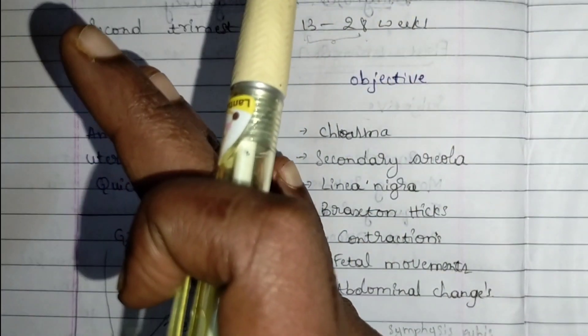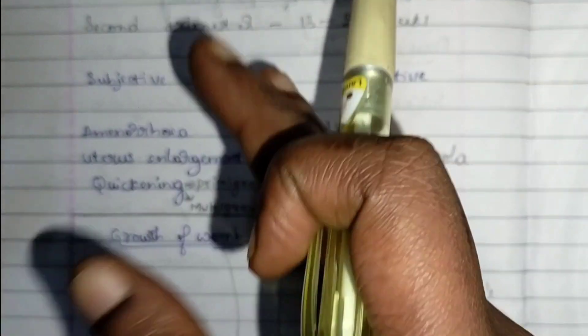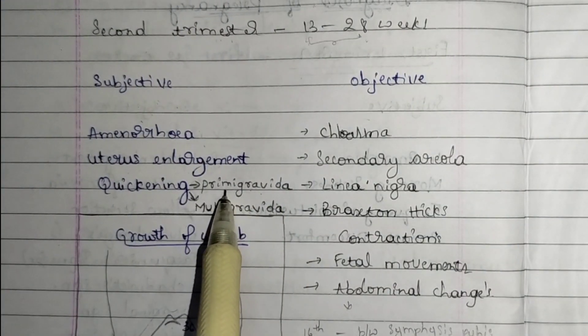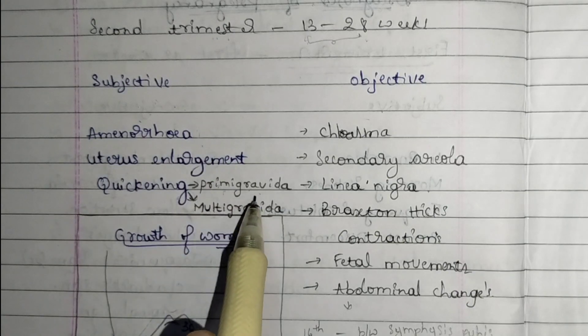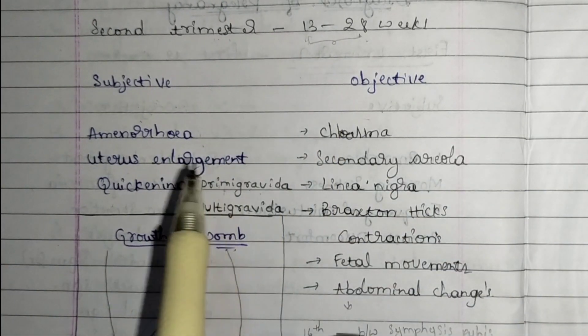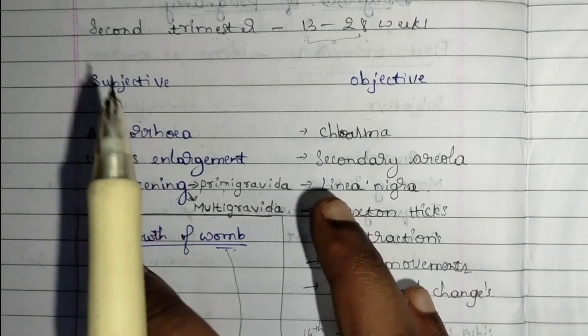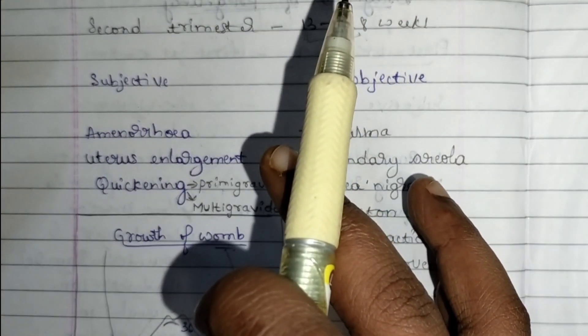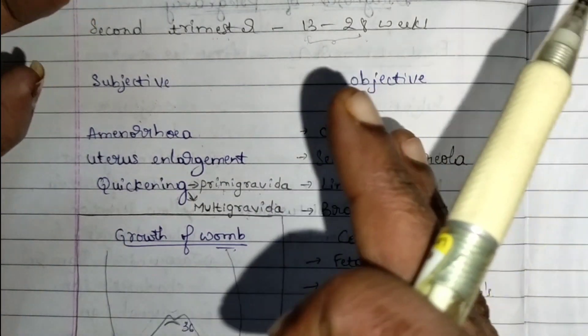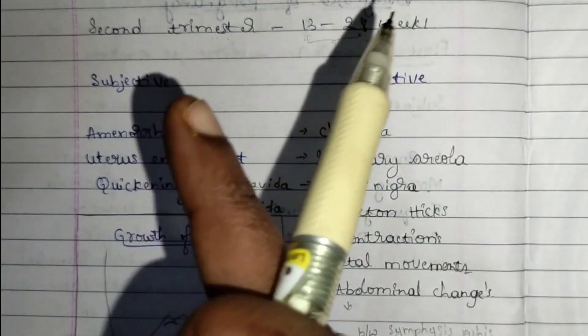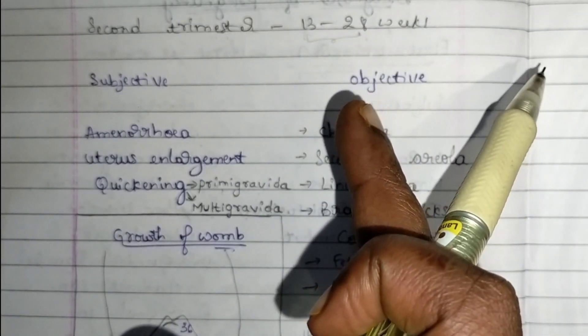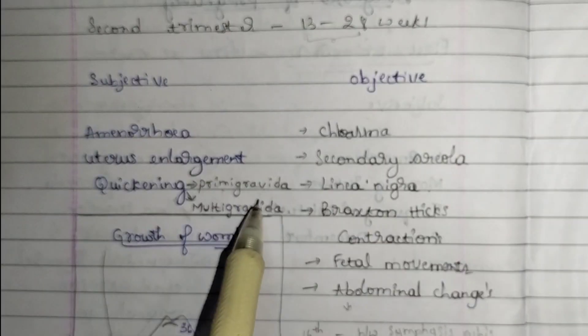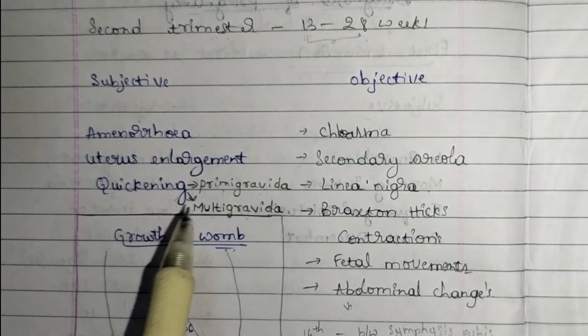If the mother is primigravida, meaning first-time pregnant, the quickening will be felt at 18th week. For multigravida, if the mother already has a child and this is the second or third pregnancy, quickening is seen around 16th week.